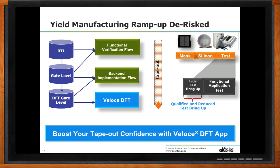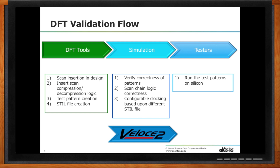So let's dive into some details about how this works. This view here is explaining the overall DFT validation flow. You usually have three steps. The first one is where all the EDA DFT tools are utilized. You get a gate-level netlist and need to do insertion — either scan, logic BIST, or memory BIST. You are inserting specific dedicated logic targeted to be used on the tester.